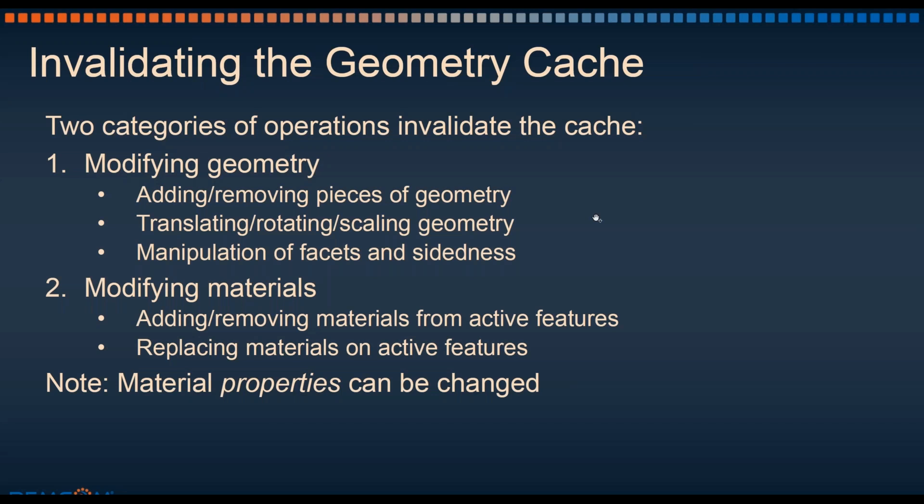Secondly, modifying the materials on any of the active features will invalidate the geometry cache. So adding or removing materials or replacing materials on active features. It is worth noting that material properties themselves can be changed. So the properties within a material that's in use on a feature can be modified without invalidating the cache.